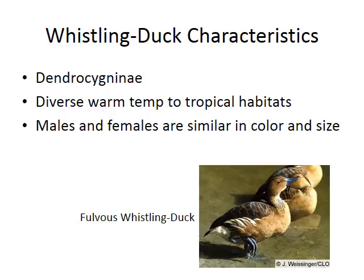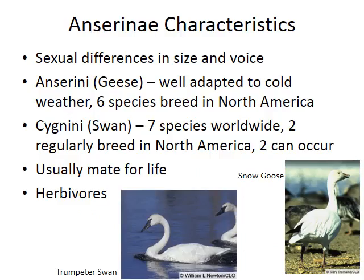The first group is the whistling duck — the Dendrocygnidae. They are very different from a lot of other ducks; they look like what would happen if you crossed a goose with a duck. They have the coloring of a duck but the body structure of a goose. They tend to live in warm-temperate to tropical areas, and the males and females are similar in color and size. We have the fulvous whistling duck and also the black-bellied whistling duck.